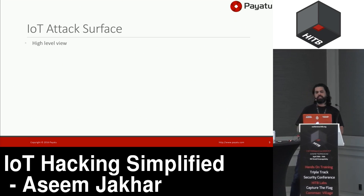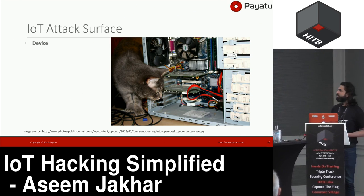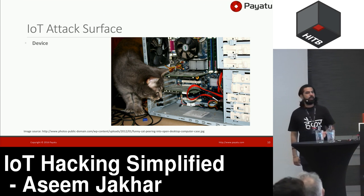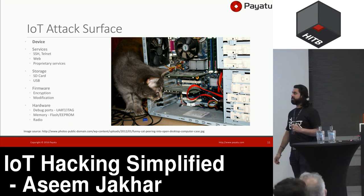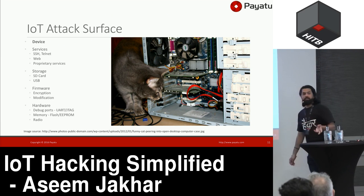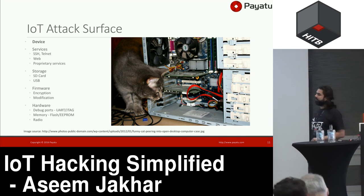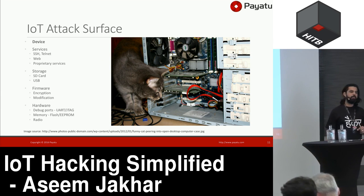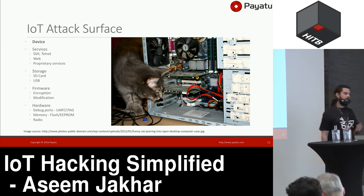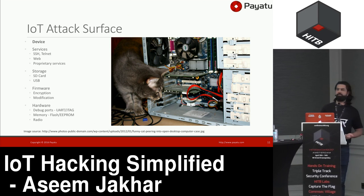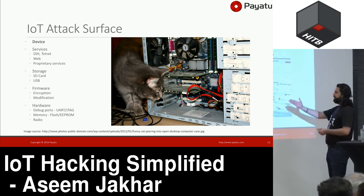The attack surface, if you look at it from a very high level, one of the biggest components is the device itself. If it's an embedded Linux device, you'll typically have services running on the device. You may have external storage — not very common for small sensors. We've even managed to own a device only by accessing it through the USB. Then the firmware: most vendors will not encrypt their firmware, and there are ways to get the firmware from the hardware directly. And then finally there's the hardware.